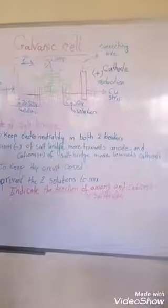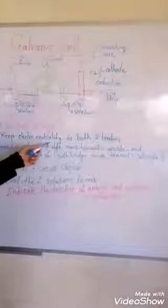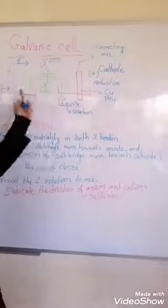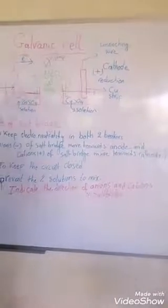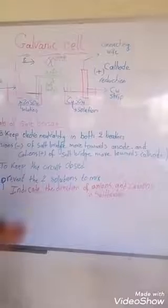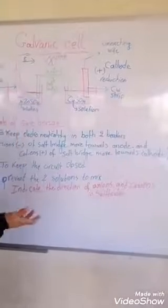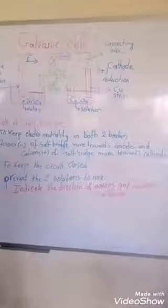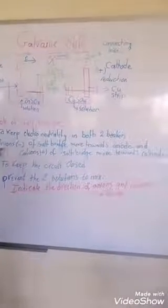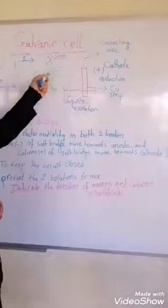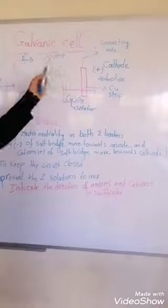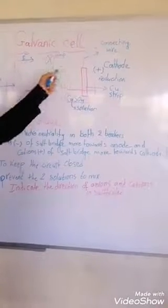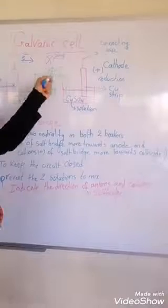So what is the role of the salt bridge? The salt bridge connects the two beakers. Its role is to maintain electrical neutrality in both beakers. It does this by allowing ions to move between the two solutions.